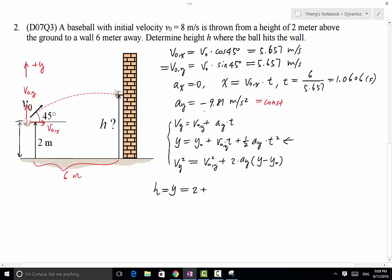V0y is 5.657 and then times time, which is 1.0606 that we just determined, plus one half times negative 9.81 times t squared, 1.0606 squared. So that's all. We do the calculation, and this equals to 2.48 meters.